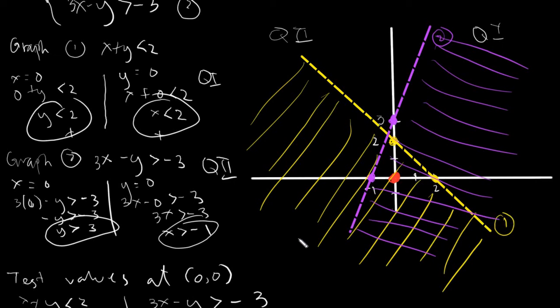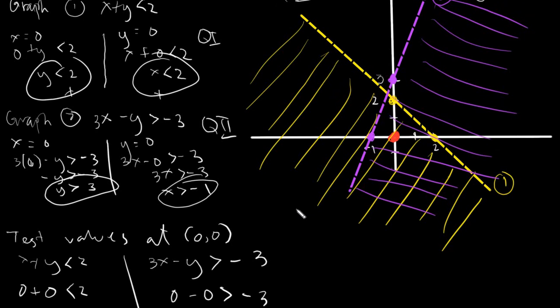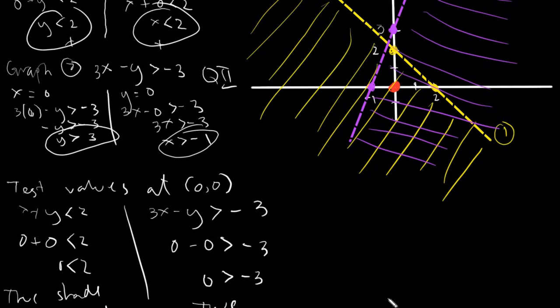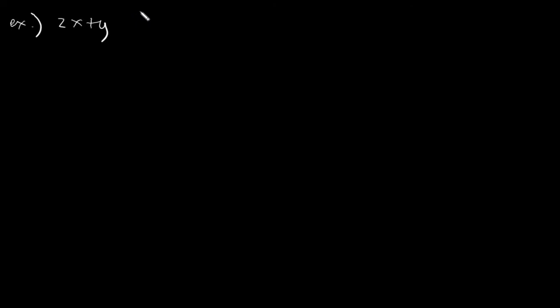That would be our first example. Also, let me remind you that every part of the line is not part of the solution if it is a dashed line, so we should have a solid line for solid inequalities. Let's have our next example: we have 2x plus y is greater than or equal to 1, and x minus 3y is less than 2.